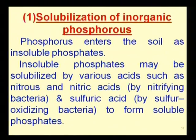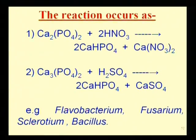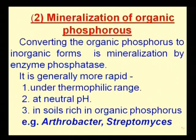In detail, phosphorus is present as insoluble phosphates in soil. These are solubilized by acids — nitrous and nitric acid produced by nitrifying bacteria, and sulfuric acid produced by sulfur-oxidizing bacteria. The insoluble phosphates are thus converted into soluble phosphates. This reaction is often carried out by organisms like Fabobacterium and Bacillus.